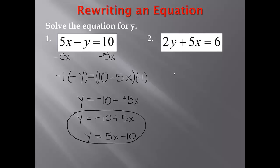Now for number 2, we have 2y plus 5x equals 6. We want to solve for y again. The first thing we need to do is move this 5x. Since we're adding it in the problem, we would subtract to solve. So minus 5x on the left-hand side and minus 5x on the right-hand side. We still have 2y, and 5x minus 5x is 0, so that would be equal to 6 minus 5x.